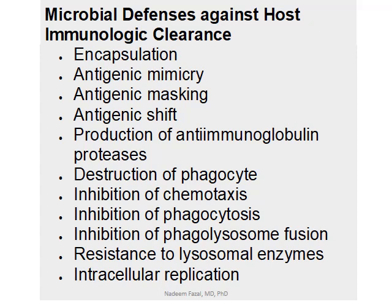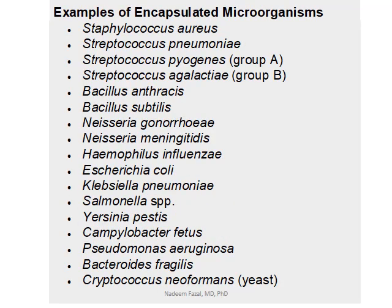For every step of a normal acquired or adaptive immune response, bacteria have a capability to inhibit, stop, or diminish it. Capsulated bacteria are particularly important to recognize. The list includes Staph, Streptococcus, Bacillus anthracis, Neisseria gonorrhoeae, Neisseria meningitidis, and others — all challenging our immune system and relevant in the context of complement deficiencies and other immune responses.